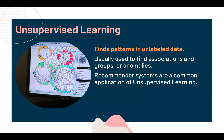When labels aren't available, we turn to unsupervised learning, which finds patterns in unlabeled data — looking for patterns, relationships, and anomalies. Amazon and Netflix use this in their recommendation systems, clustering user behavior to predict new shows or products they might like. These recommendation systems account for 35% of purchases on Amazon and about 75% of what consumers watch on Netflix.